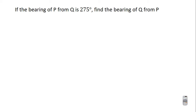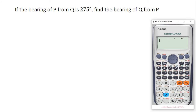Let's move on to the last question. The bearing of P from KO is 275 degrees; find the bearing of KO from P. Again we are looking for the back bearing. The formula says: if the angle is greater than 180 degrees, subtract 180 degrees from it. 275 is greater than 180, so: 275 − 180 = 95 degrees. Using the formula, the back bearing is 95 degrees.